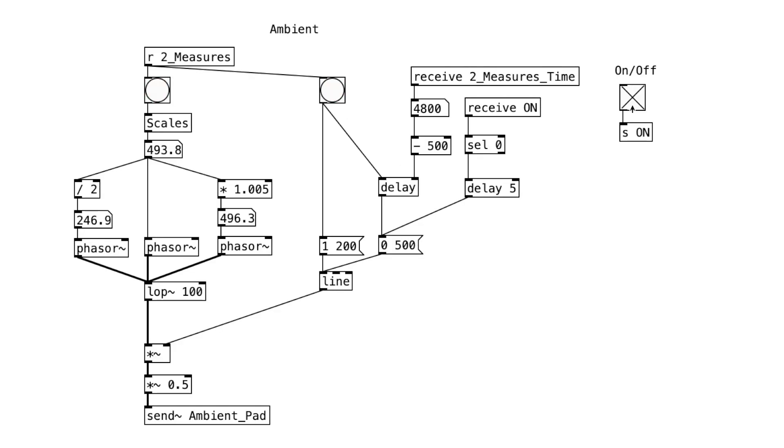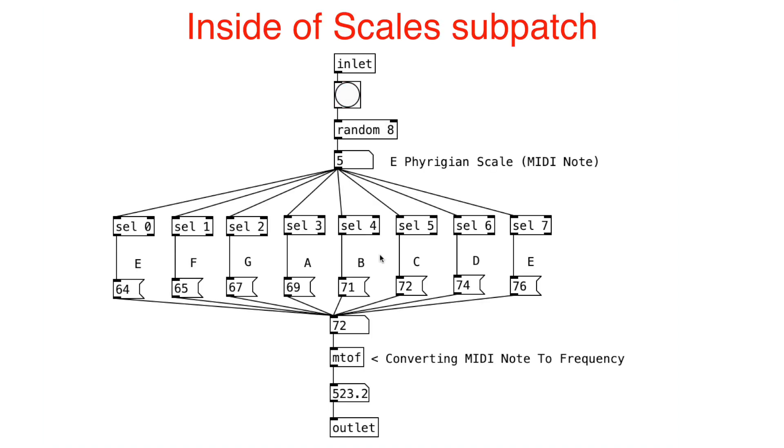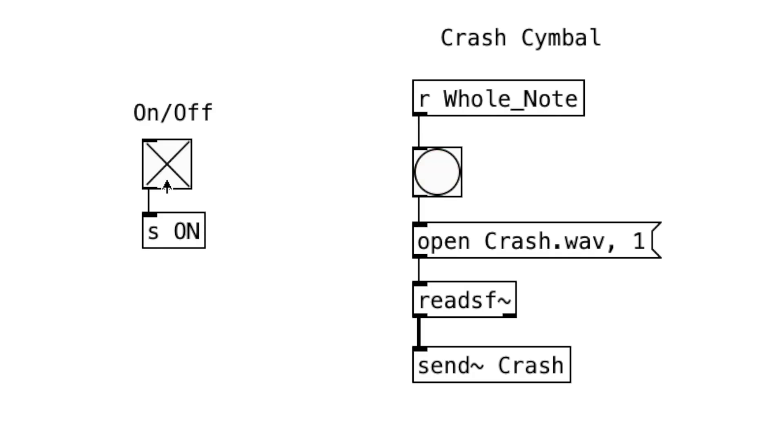As for the ambient layer, it looks nearly identical from the last tutorial. Again, we're randomly selecting notes from the E Phrygian scale. I also included this crash cymbal here, which will trigger at the start of every measure. Generative sequencers like this one can sound very chaotic, so it's always nice to have a sound that plays at the beginning of every measure as an anchor point.